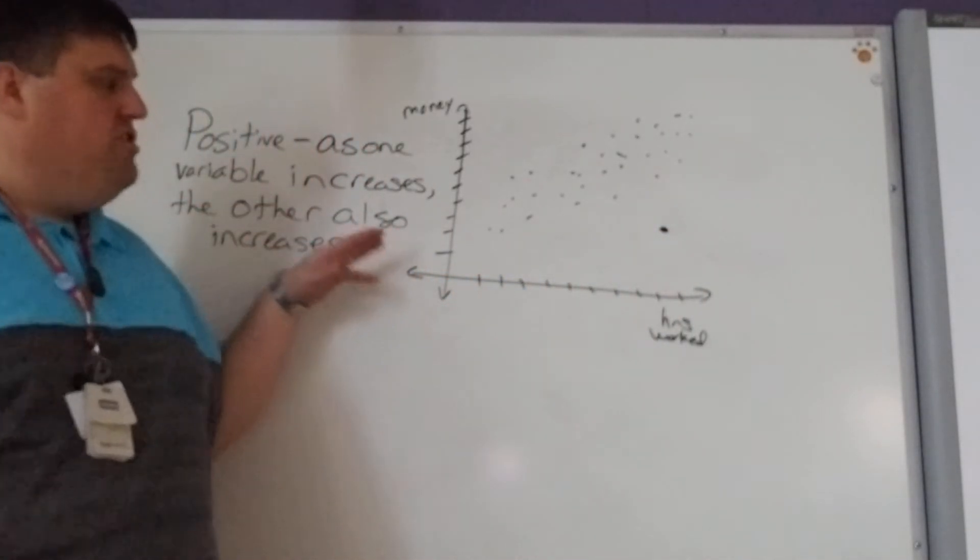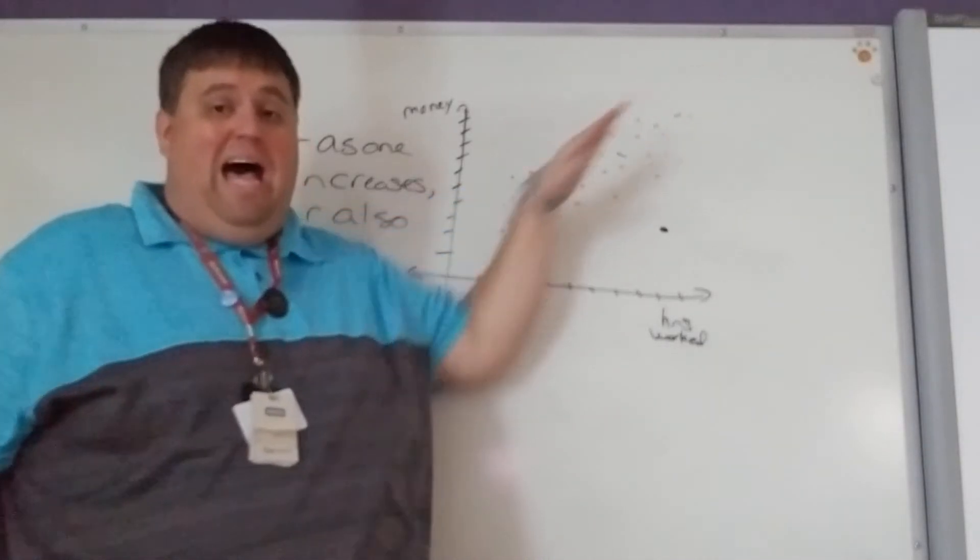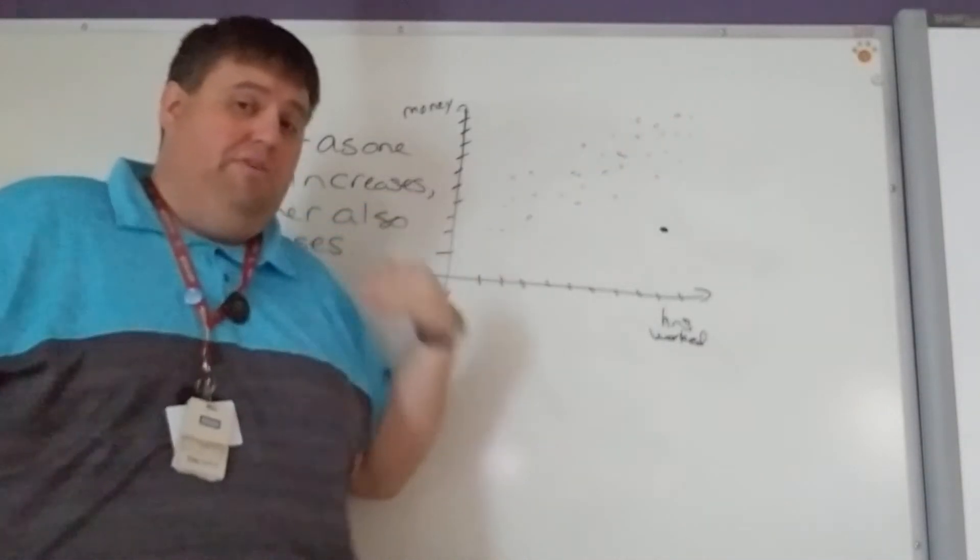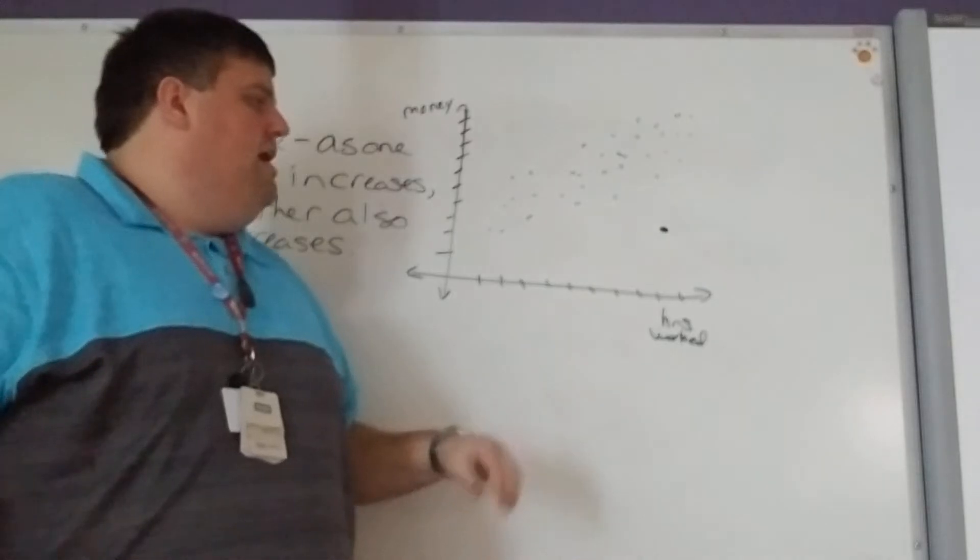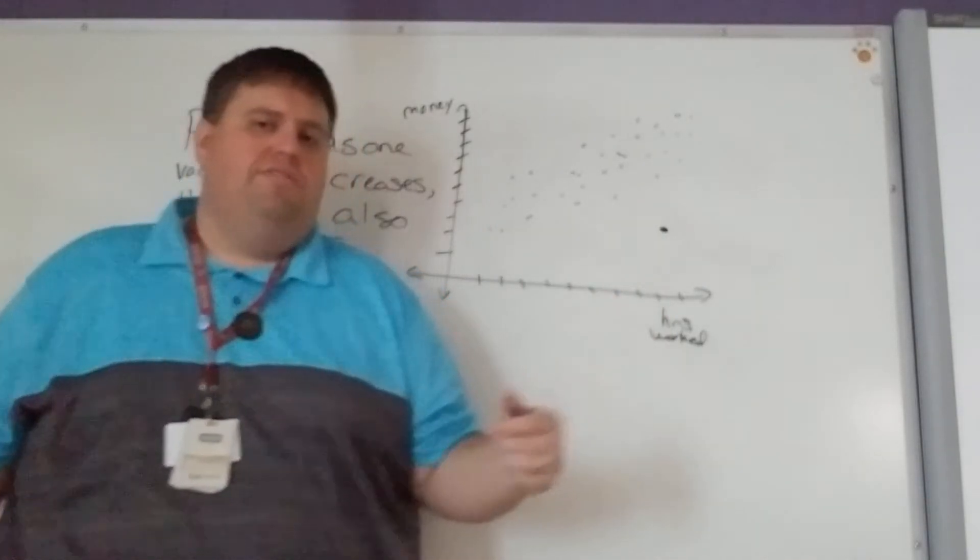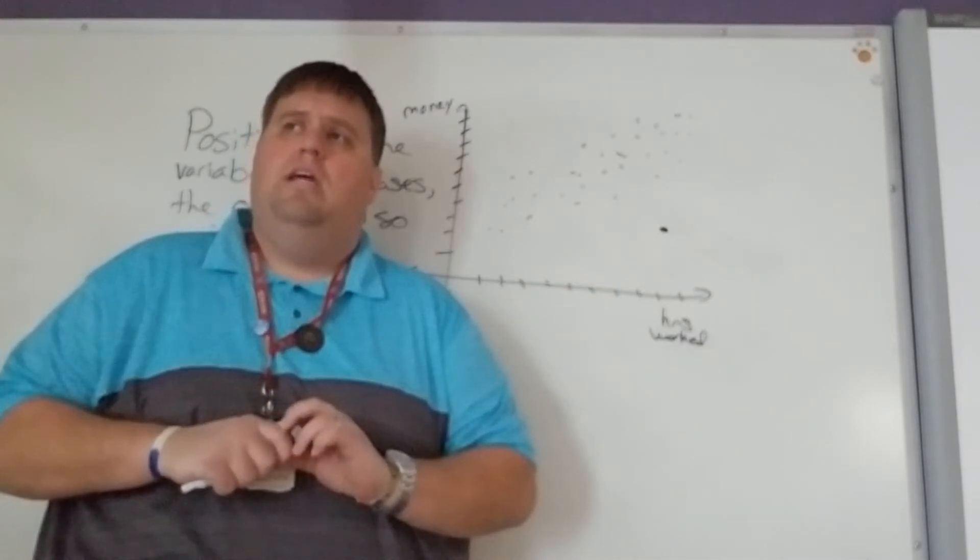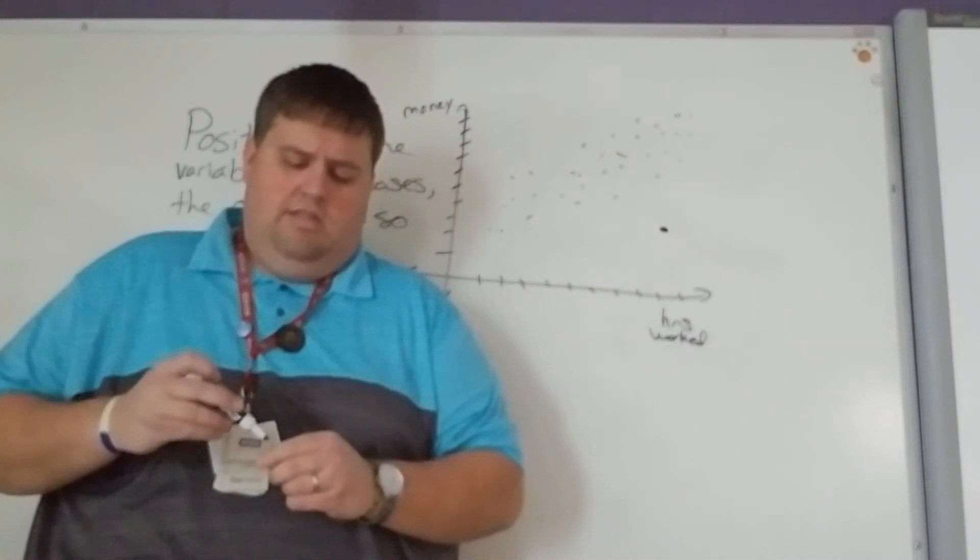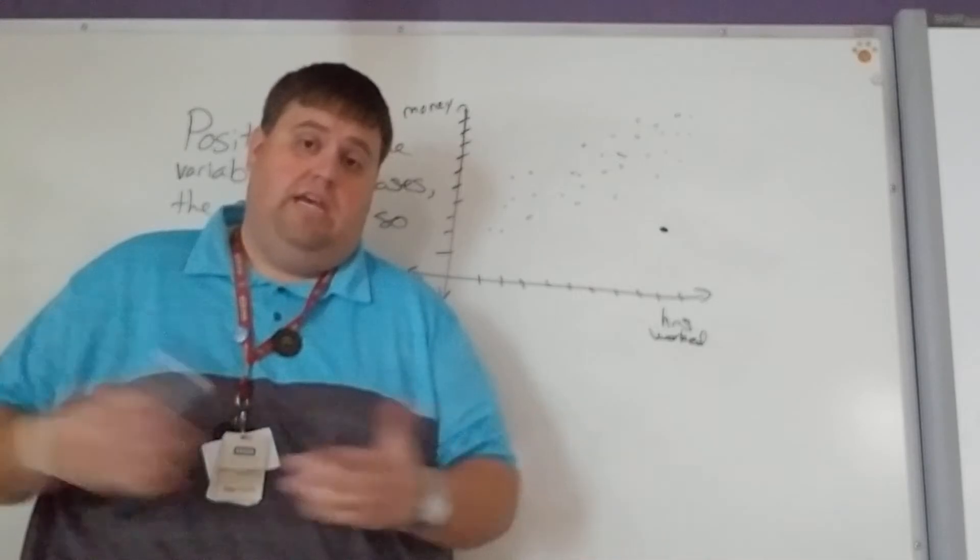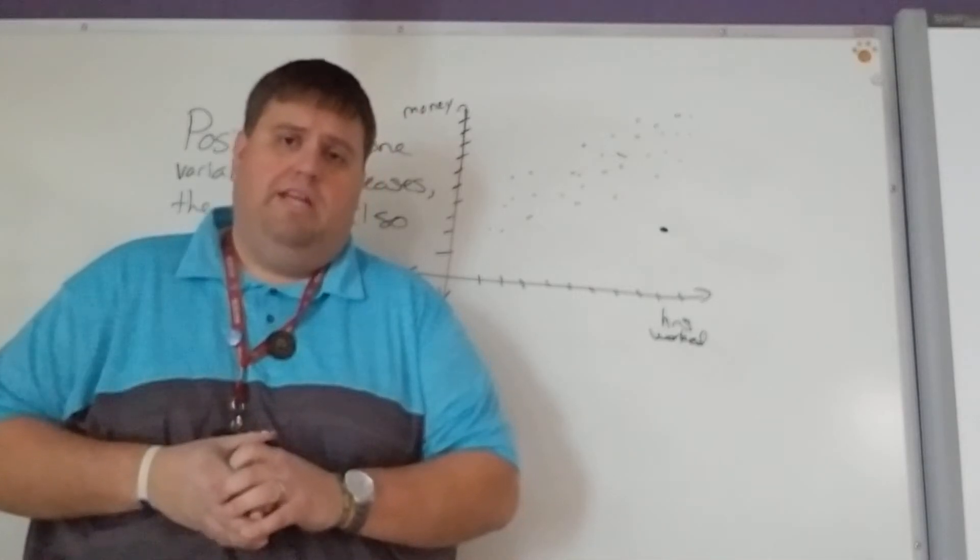So a positive relationship is always going to look like it would have a positive slope if I were to connect these points. And it's one thing's increasing, the other's increasing. So they might not give you a graph. They might say, hey, what about temperature and ice cream sales? What kind of relationship would happen?